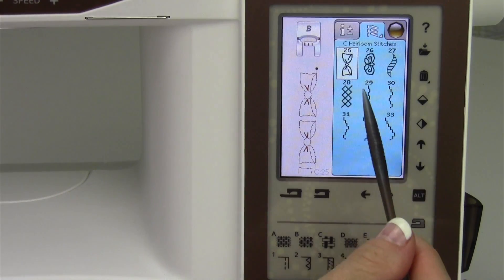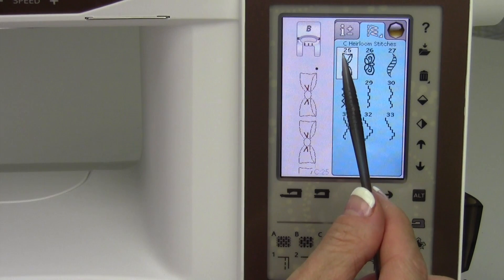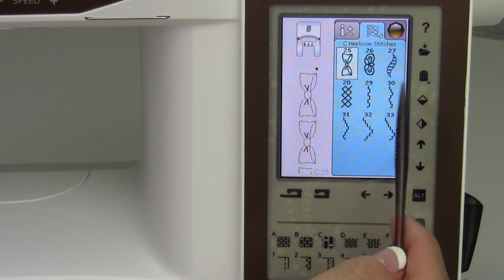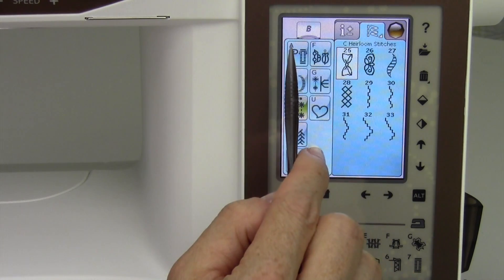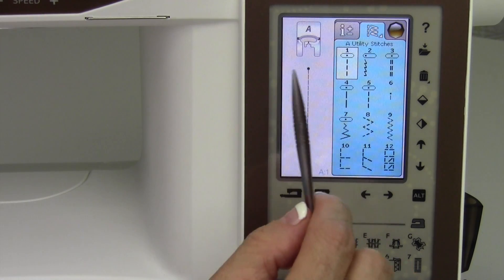As you pick stitches, right now I'm on menu C, all the way down into stitch number twenty-five. What's the fastest way to get back to a straight stitch? You could do a couple of things. You can touch and hold, come back to A, and you can pick a stitch. That was quite a few touches.